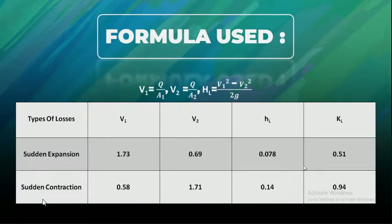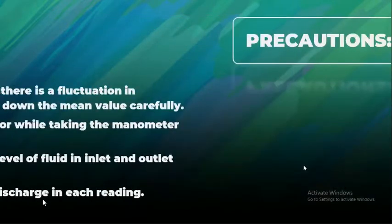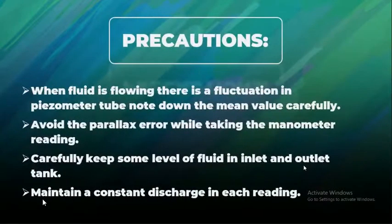Now moving to precautions. Note down the mean value. Carefully avoid parallax error due to color of fluid while noting manometric reading. Keep some level of fluid in inlet and outlet tank and maintain a constant discharge in each reading.